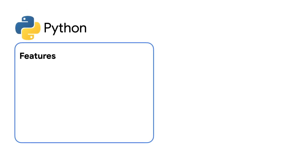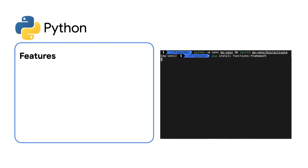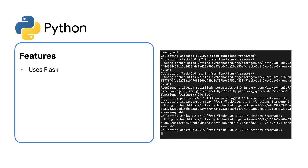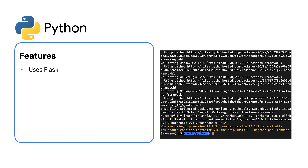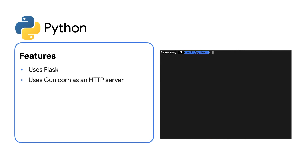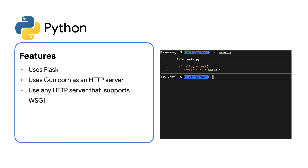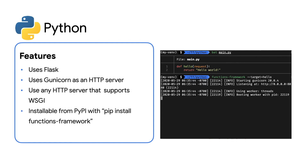For Python users, the Functions Framework uses Flask, a popular Python web framework, under the hood. By default, it uses Gunicorn as an HTTP server, but also provides a WSGI app so you can use any HTTP server that supports WSGI. It's installable from PyPI with pip install functions-framework.